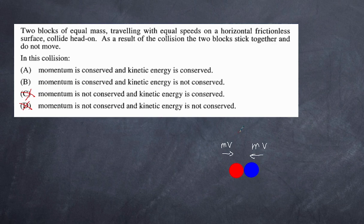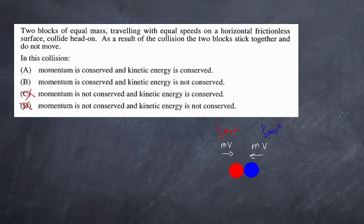For kinetic energy: KE is a scalar, so we sum the individual kinetic energies. Before the collision each has ½mv², giving a total of mv². After the collision they stick together with no velocity, so KE afterwards is zero. Kinetic energy is not conserved. The only correct answer is B.